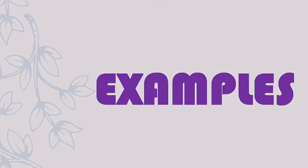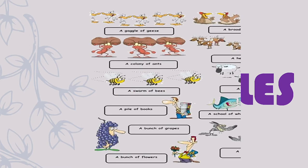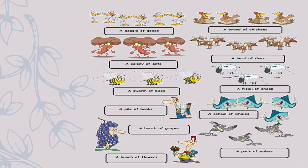To understand more about collective nouns, here are some examples with pictures. A gaggle of geese — can you see these geese in the picture? Geese is a common noun, and when we see many geese together we say it is a gaggle of geese. So 'gaggle' is our collective noun used for a group of geese. In the same way, a brood of chickens — when we see many chickens together, we say there is a brood of chickens, so the word 'brood' is our collective noun.